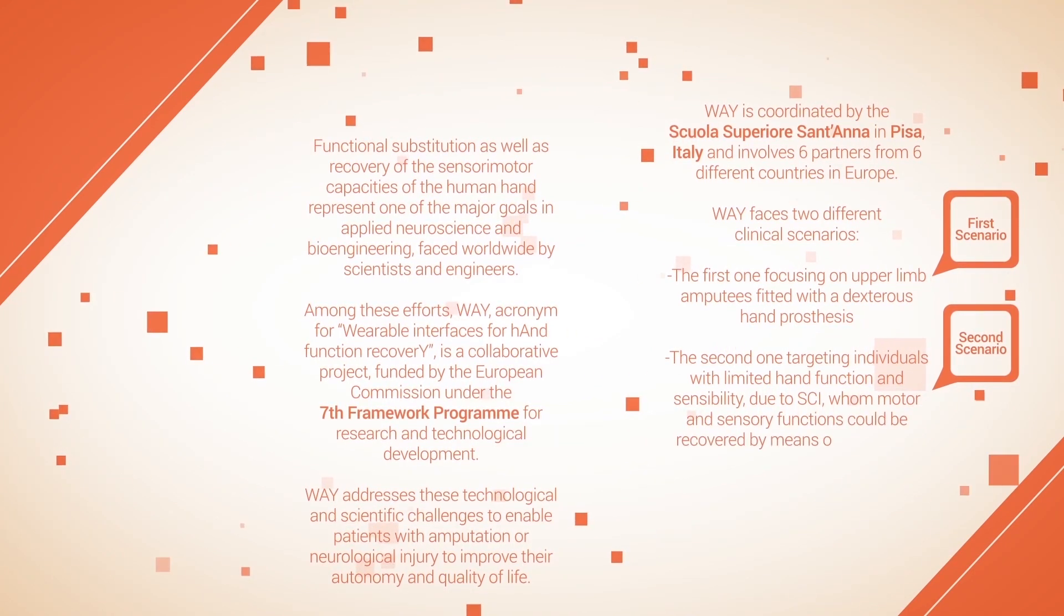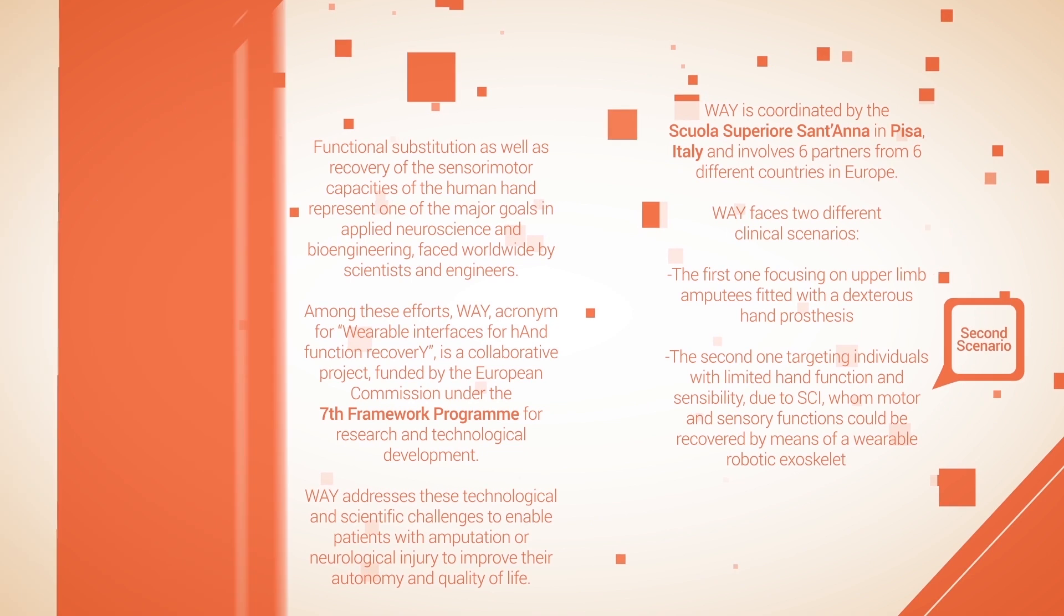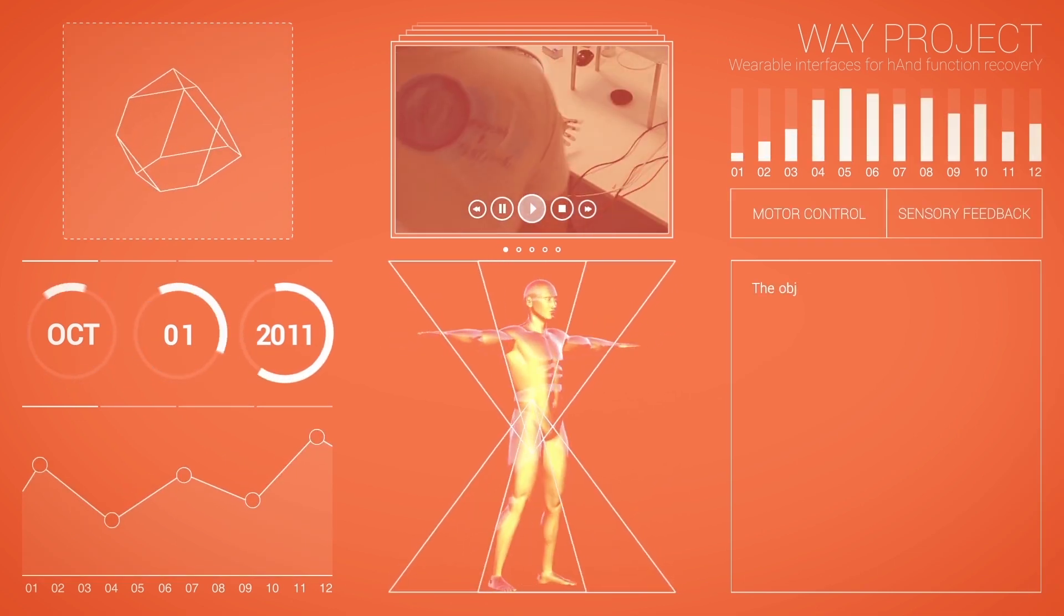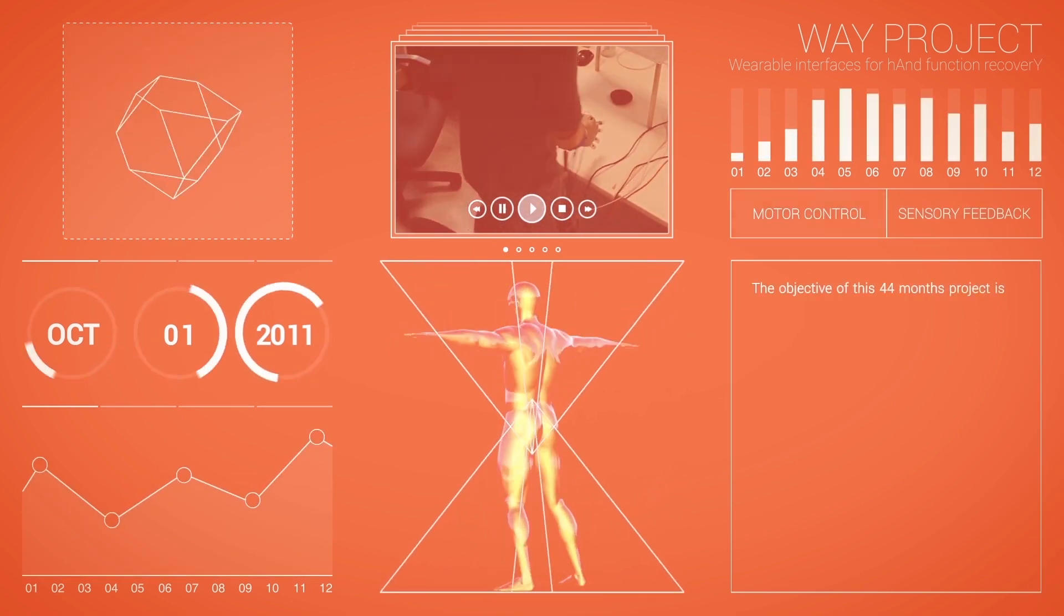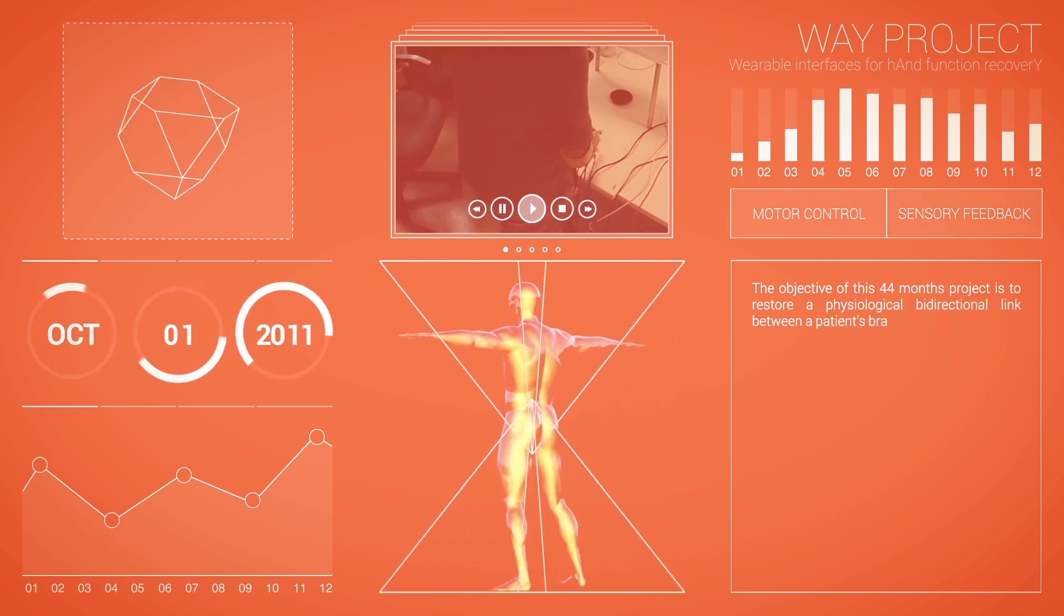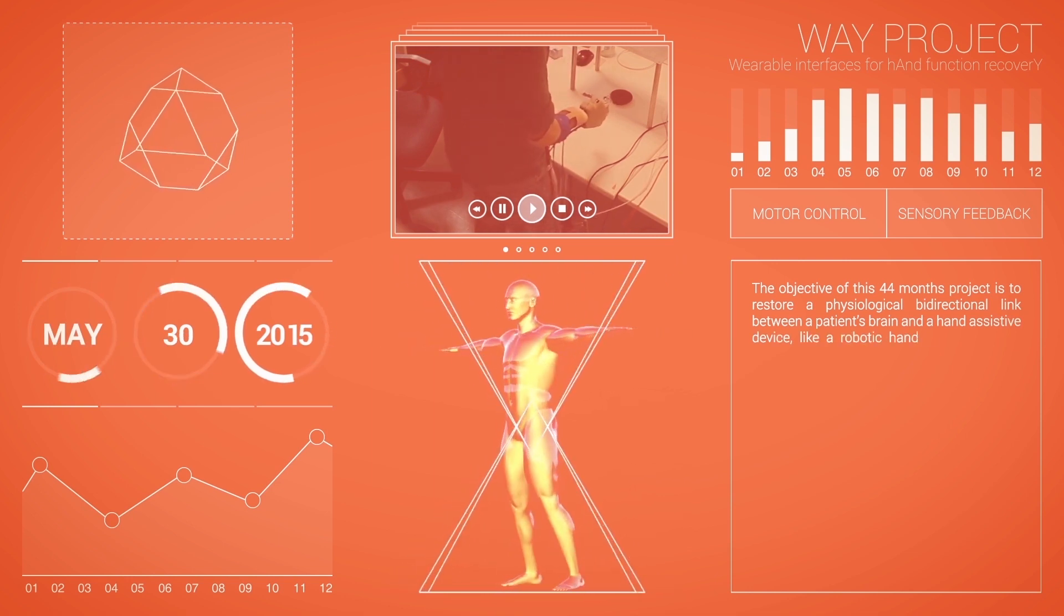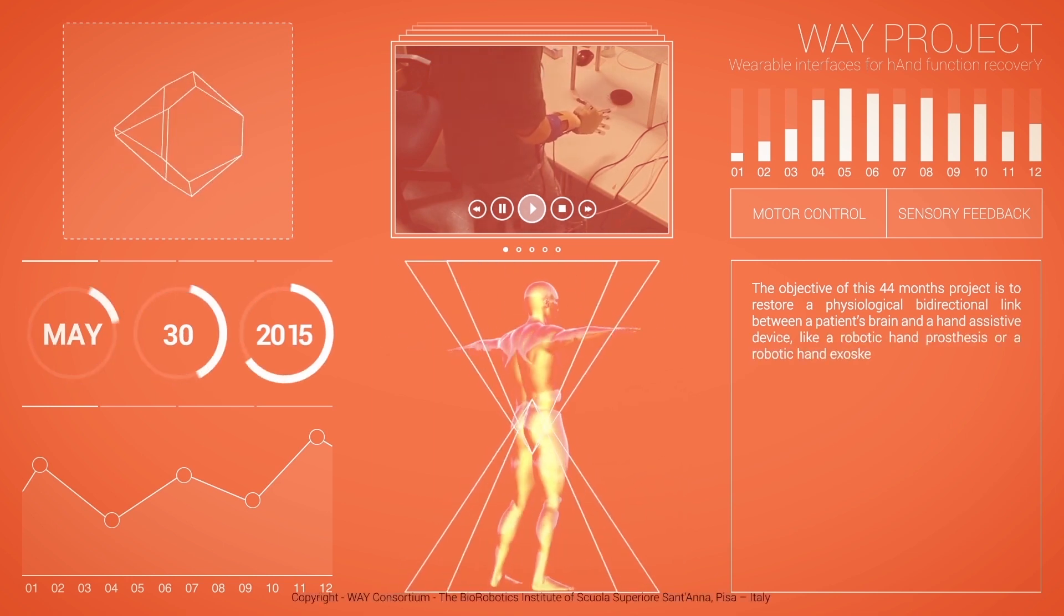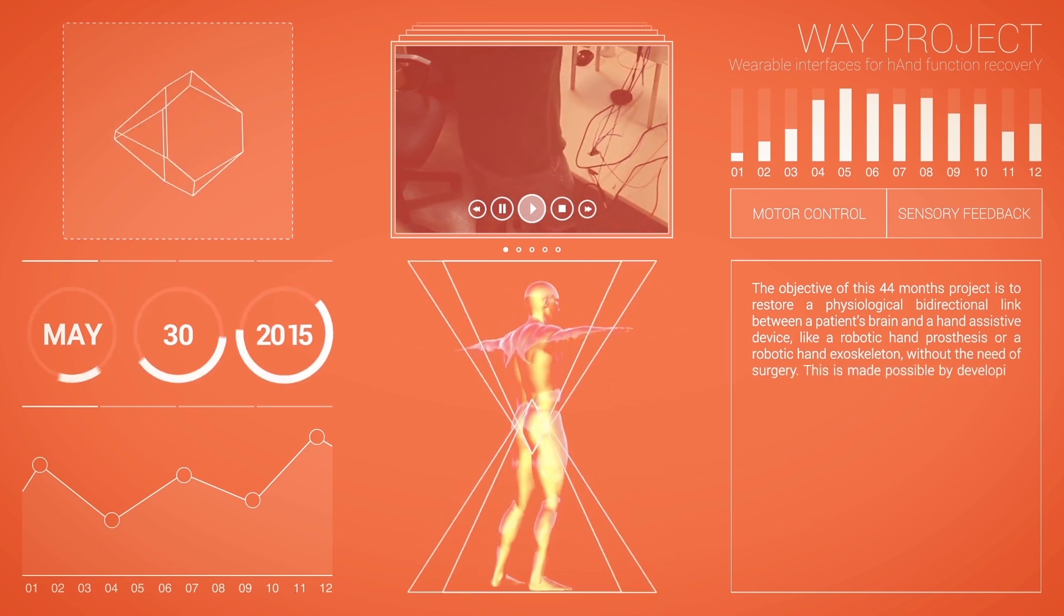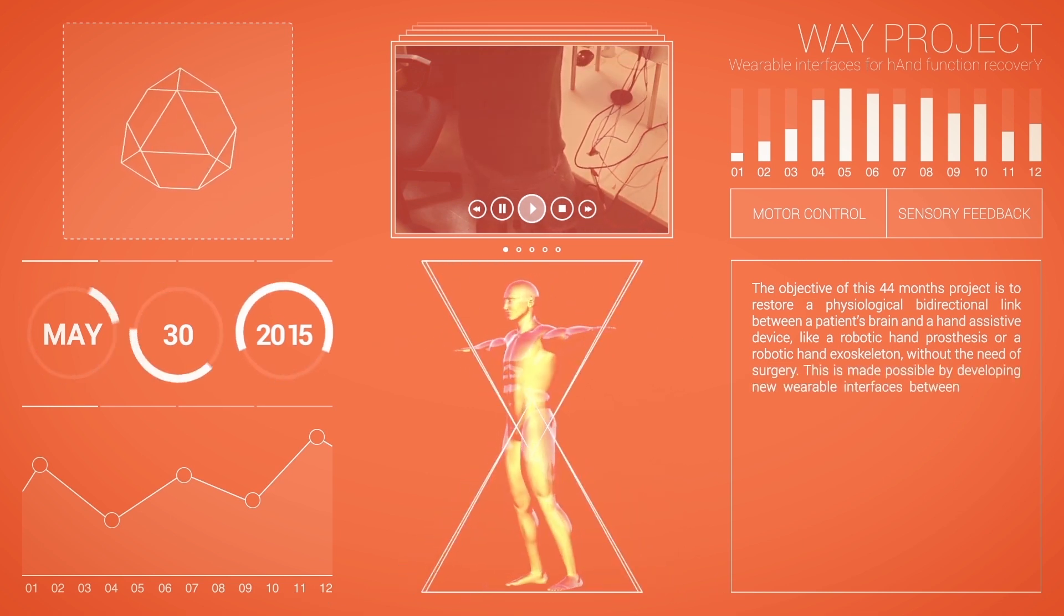The objective of this 44-month project is to restore a physiological bidirectional link between a patient's brain and the hand assistive device, like a robotic hand prosthesis or a robotic hand exoskeleton, without the need of surgery.